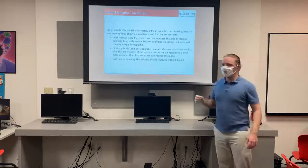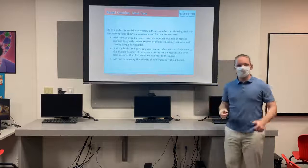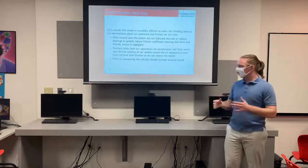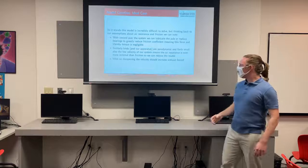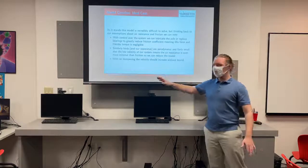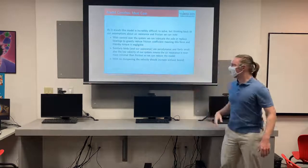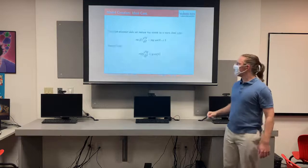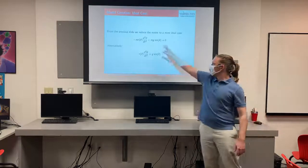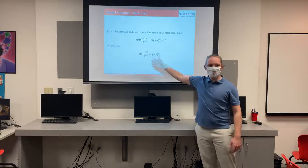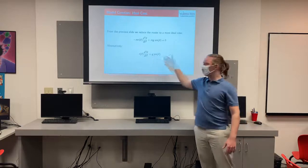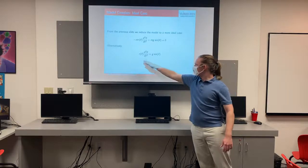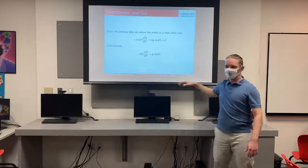Now we reduce this to an ideal case, because friction and air resistance are both really small and we can ignore them for an idealized version. We should note that without dampening the velocity will increase without bound. Ignoring those middle terms and with non-zero masses, we can eliminate them and get our ideal model, which depends on the radius, angular acceleration, gravity, and the sine term.